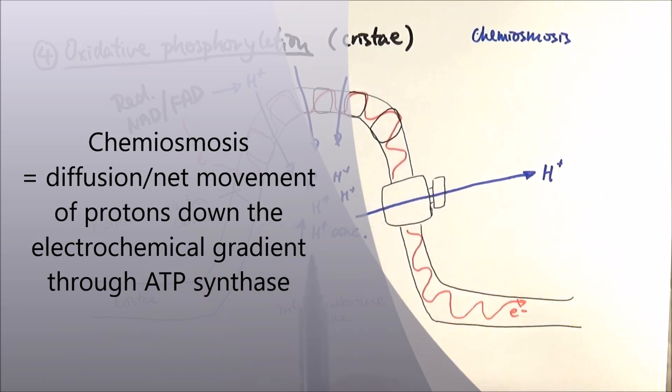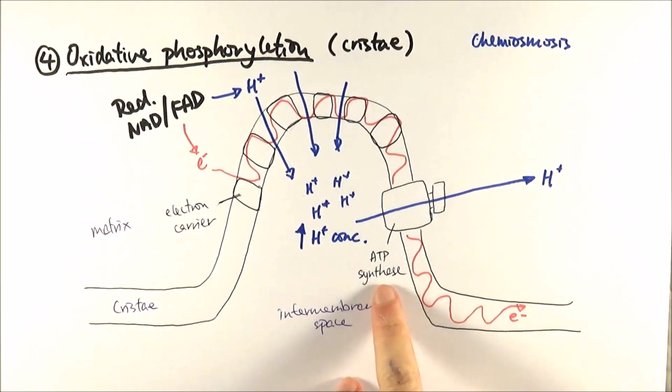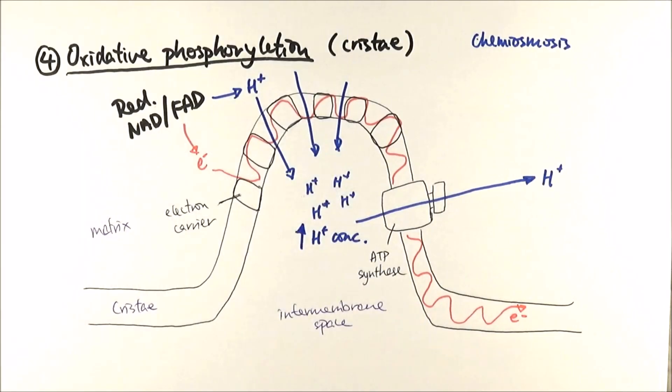Or we can say down the electrochemical gradient. What they do is they drive ATP production, because what actually happens is ATP synthase requires protons to help it turn. It literally turns. As it goes through, it will turn the entire enzyme, and it brings ADP and a phosphate group closer together to form ATP.